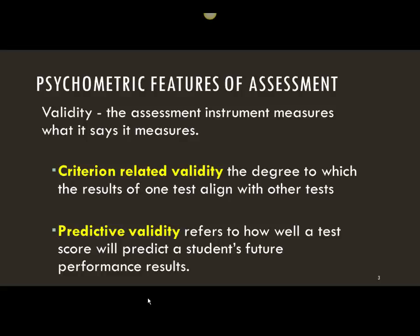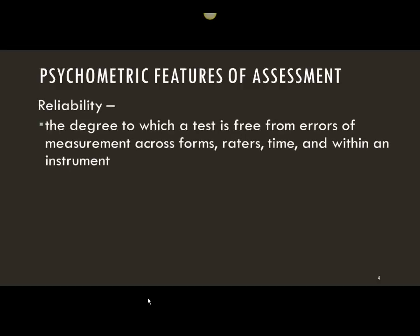Please read the definitions of validity in your textbook and take notes in your notebook. The second important property is reliability. Reliability is the degree to which a test is consistent — that is, free from errors of measurements across raters, across forms, etc. You can watch an additional video I uploaded on Moodle.